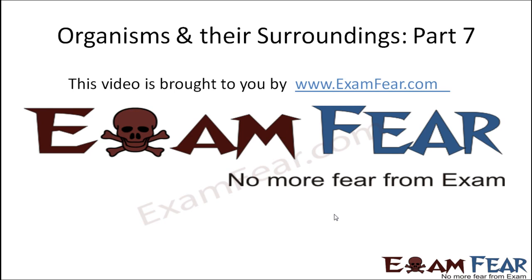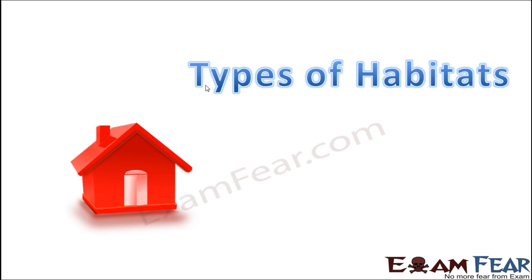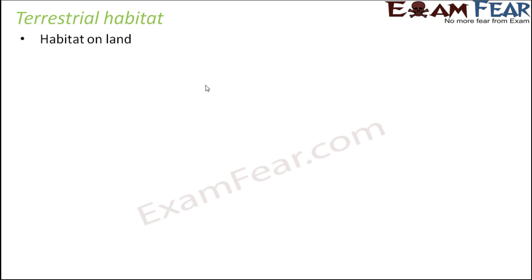Hello friends, this video on organisms and their surroundings part 7 is brought to you by examfear.com. These were some of the adaptations of different animals. Let us now talk about the types of habitats. We said that every animal has its own habitat and we also saw how different animals are living in different habitats. Now we can also classify habitats.